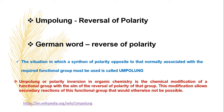If it is reversible, then that character is called Umpolung character. In other words, Umpolung or polarity inversion in organic chemistry is the chemical modification of a functional group with the aim of the reversal of polarity of that group. This modification allows secondary reactions of this functional group that would otherwise not be possible.